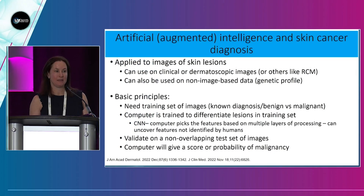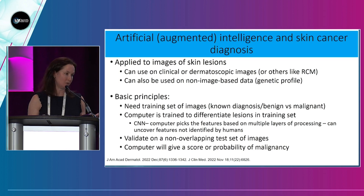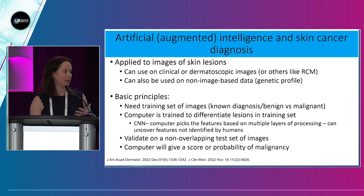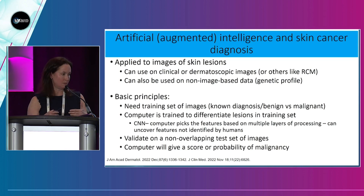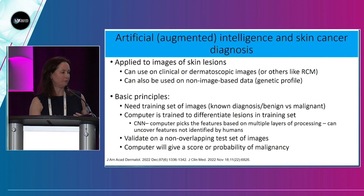I'm going to talk about AI and skin cancer diagnosis. We can think about AI as being artificial or augmented intelligence. We normally think about applying it to images of lesions suspicious for skin cancer, but it can be used for anything — inflammatory lesions, genetic profiles. The basic principle of AI is that you have a training set with a known diagnosis, and we can train a computer on features we know, or let the computer identify features it finds to be good differentiators.